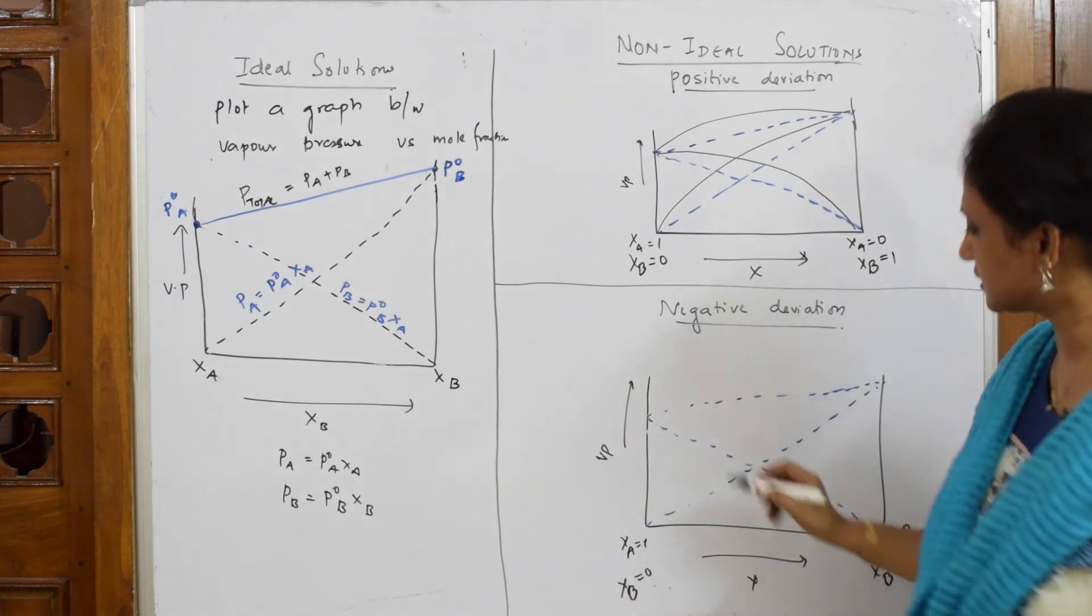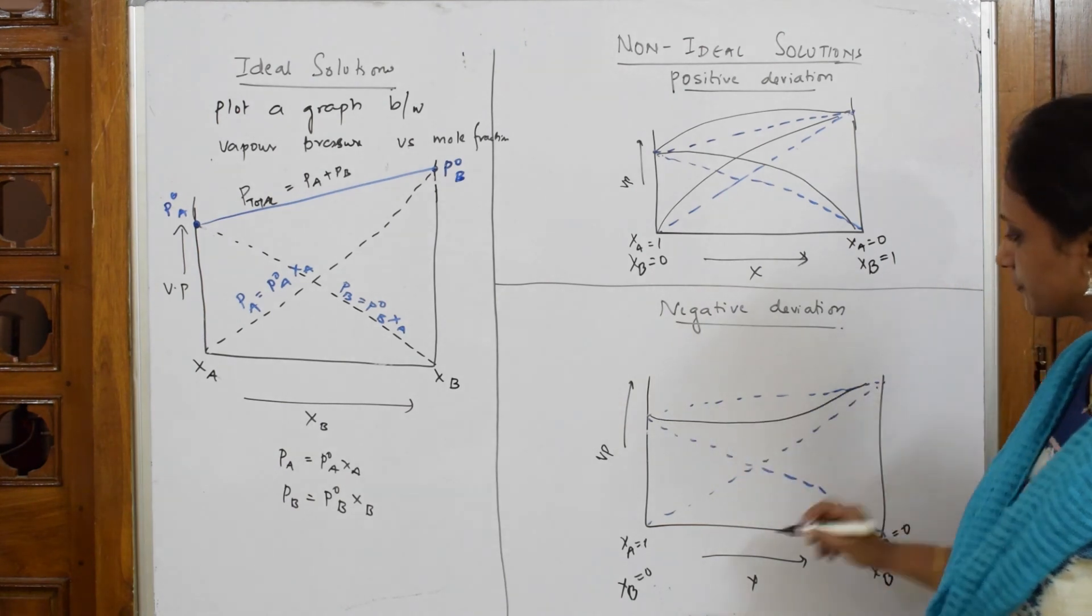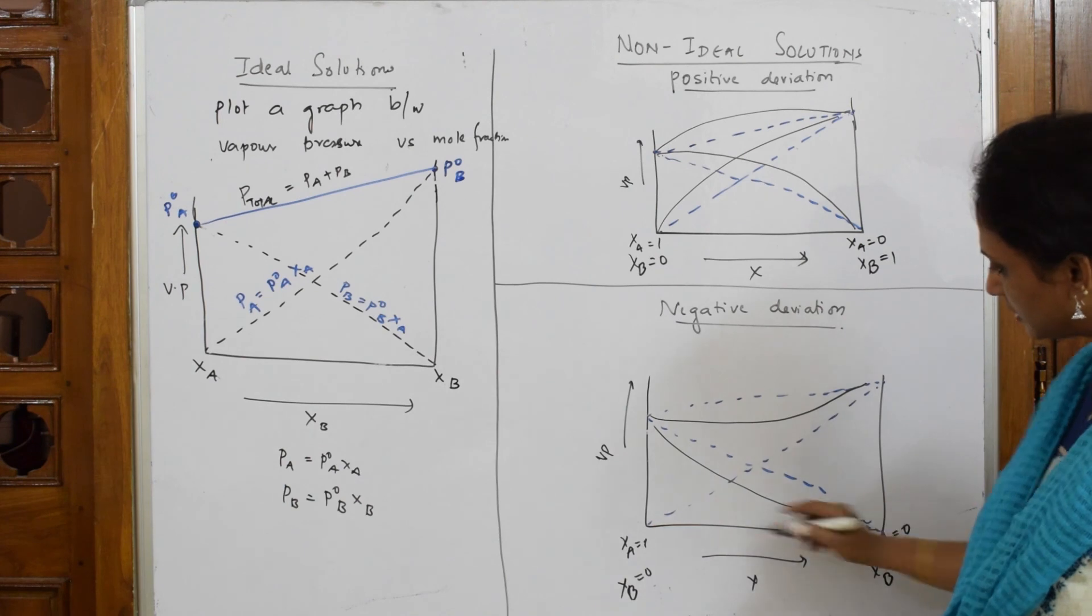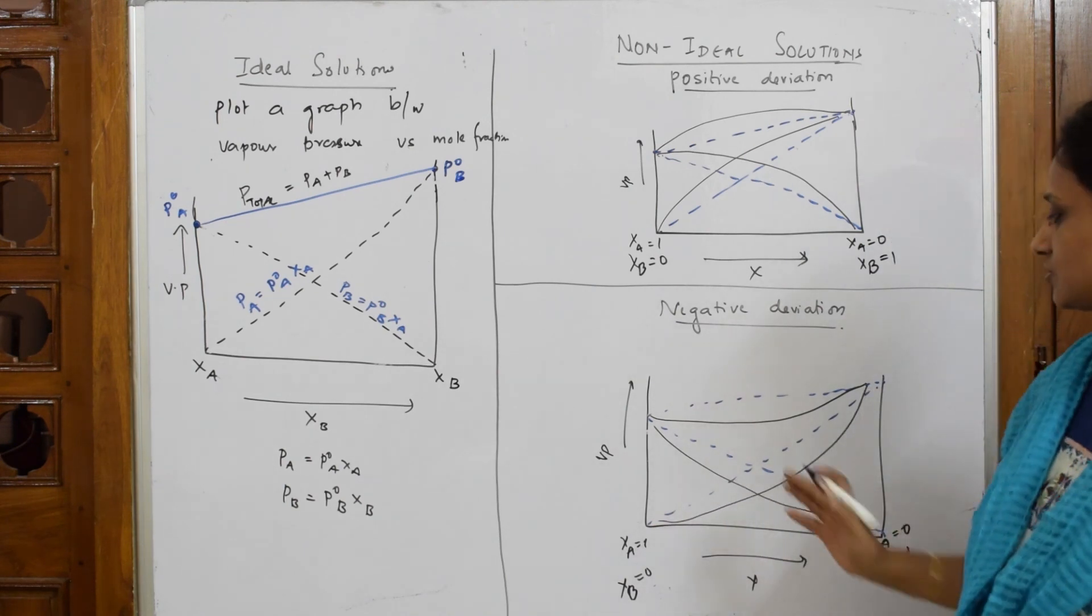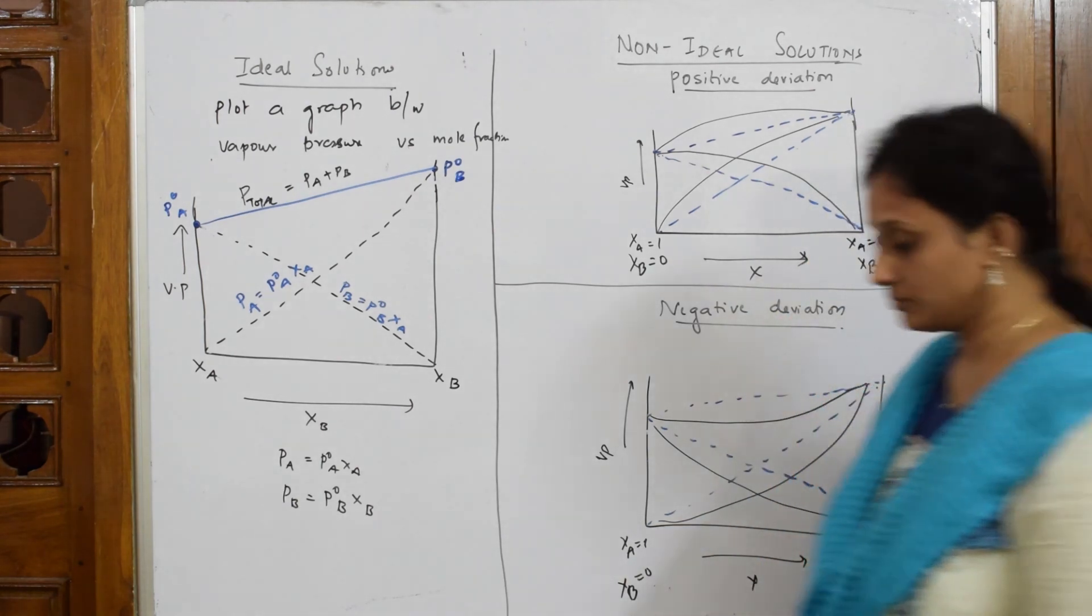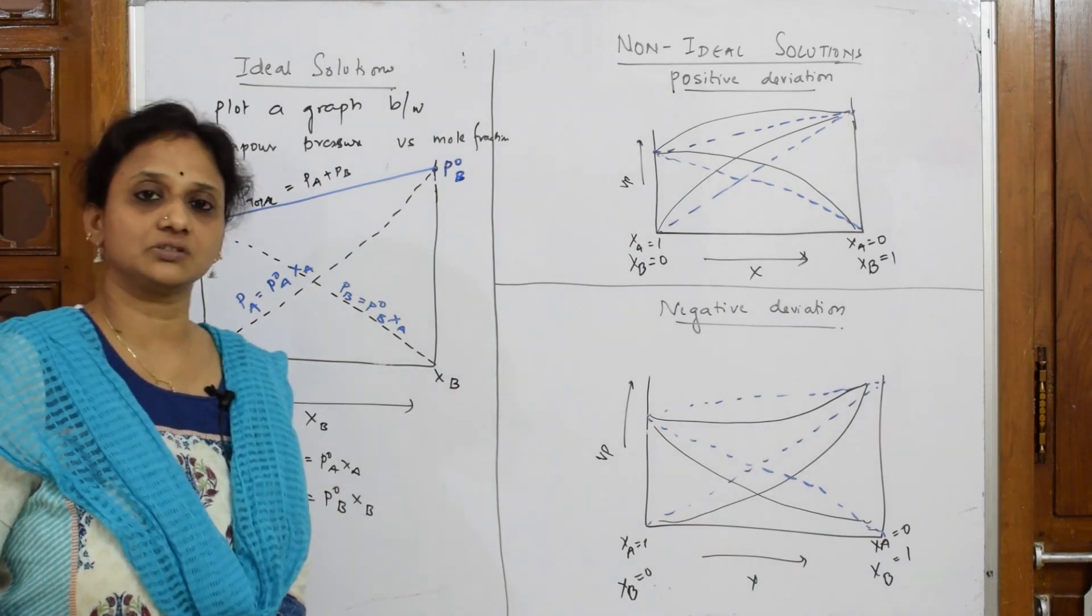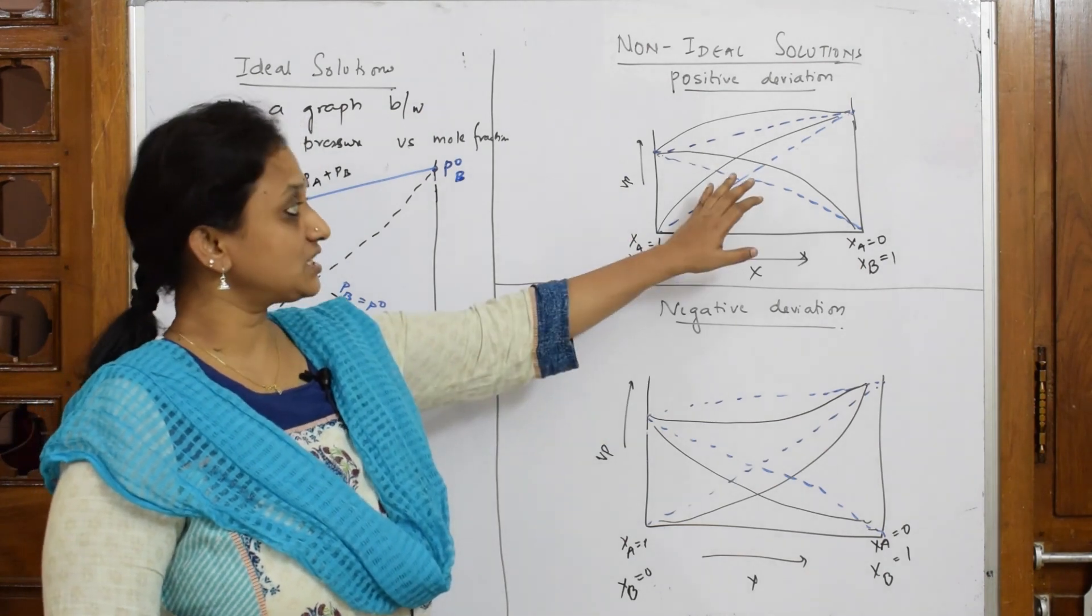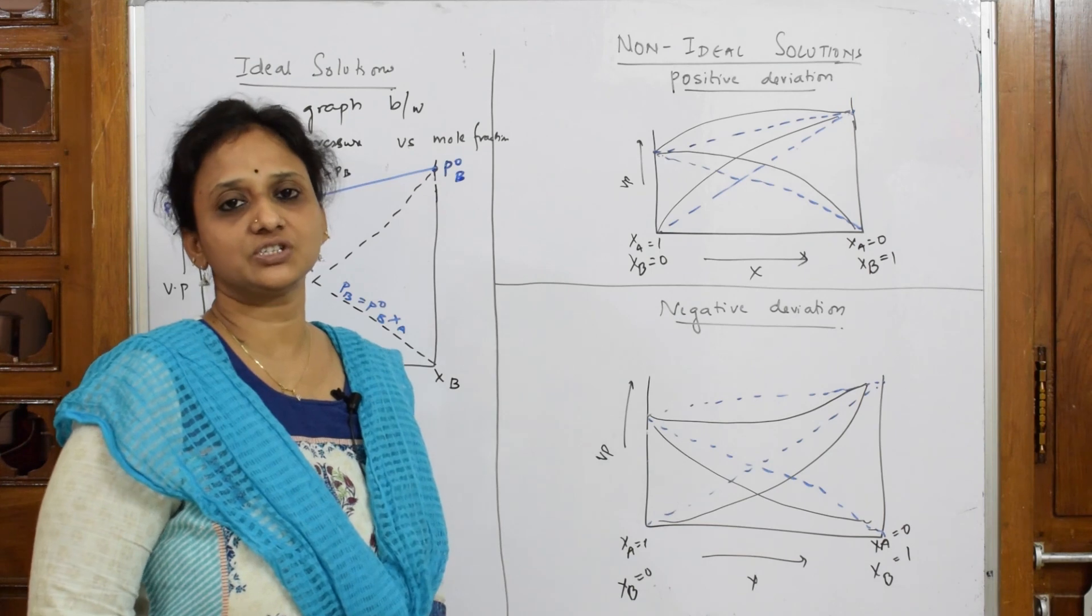Let us come back negative. Now, this is your standard ideal solution curve line. This is negative means below. This is your line, try to draw it down. This is your line, try to draw it down. So, this is your positive deviation. This is your negative deviation because delta H mixing and delta V mixing are not equal to 0. If it is equal to 0, this should be the curve. If it is not equal, positive values if you are getting positive deviation, negative values if you are getting negative deviation.